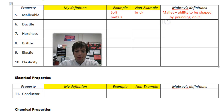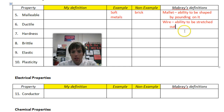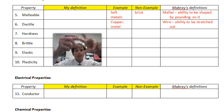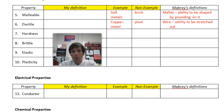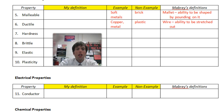Now let's talk about ductile. Our one word for ductile is 'wire' — it is the ability to be stretched out. An example would be copper, and again, a lot of metals can be ductile. If I can take something and stretch it out into a wire, we would say it has the property of ductility or being ductile. A good non-example would be plastic. I can stretch plastic all I want, but it's not going to stretch into a wire — it's just not ductile.